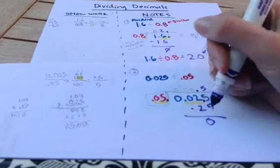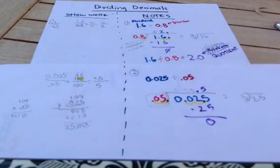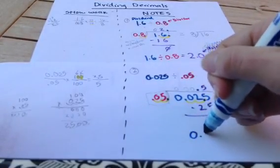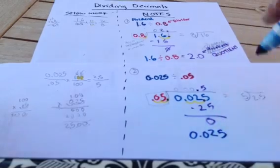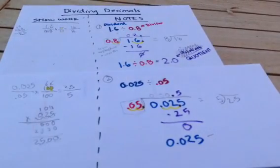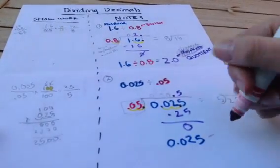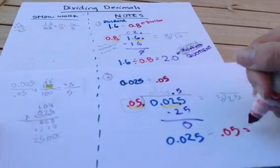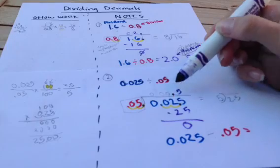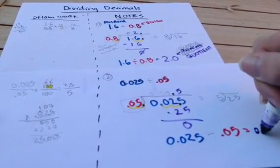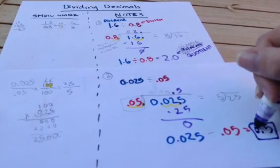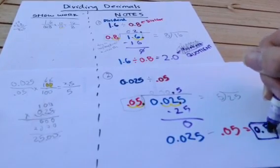I subtract and end with 0 as a remainder. So I know that I have my final answer of 0.025 divided by 0.05 is equal to my final answer of not 5, but I need to remember my decimal that this is 0.5. So my quotient or my final answer of dividing 2 numbers is 0.5.